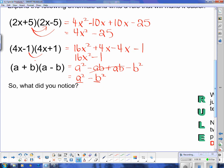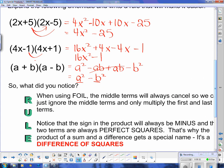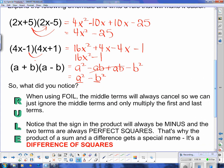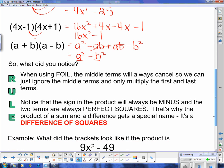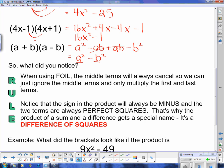And this thing is actually called a difference of squares. So the rule here, when using FOIL, the middle term will always cancel. So we can just ignore the middle terms and only multiply the first and last terms. Notice that the sign in the product will always be minus and the two terms are always perfect squares. That's why the product of a sum and a difference gets a special name. It's called a difference of squares.